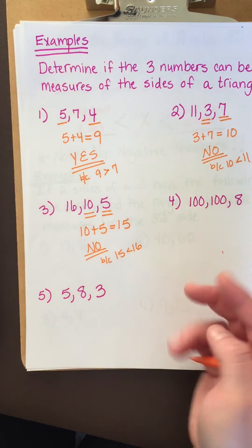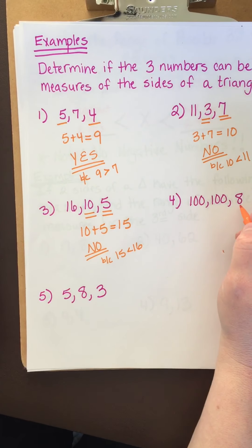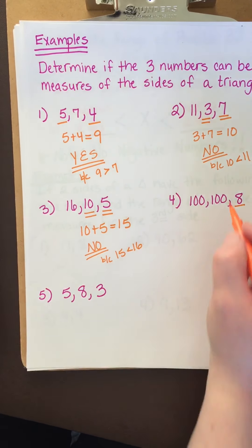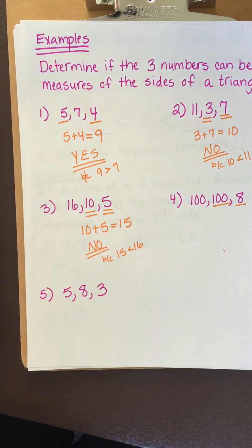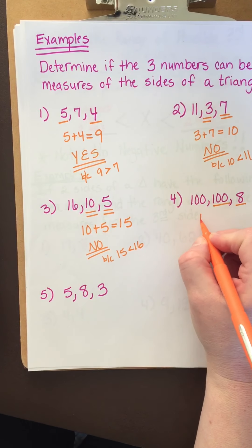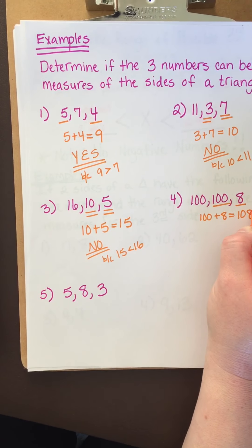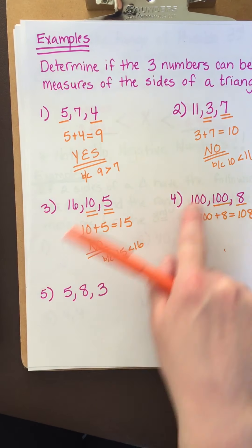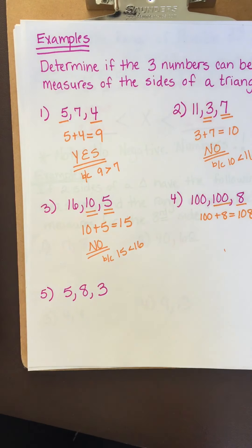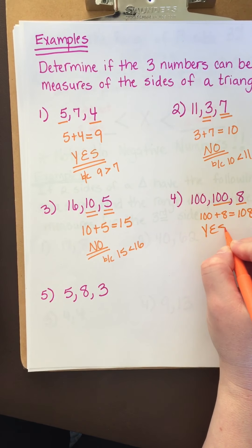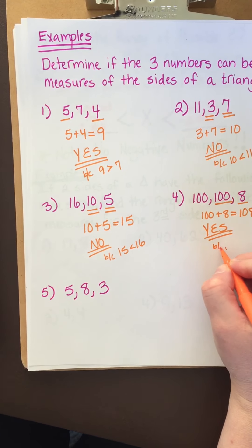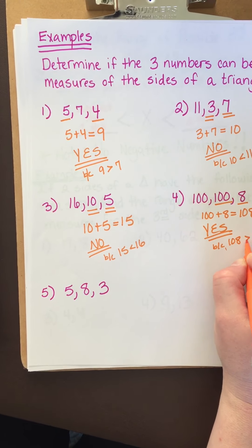Now let's look at this one. You have two 100s. So when I pick the two smallest numbers, I'm going to use 8 and one of these 100s. It doesn't matter which one, right? So 100 plus 8 is 108. Is 108 bigger than 100? Yes. All day long. So yes, it can totally be a triangle because 108 is greater than 100.